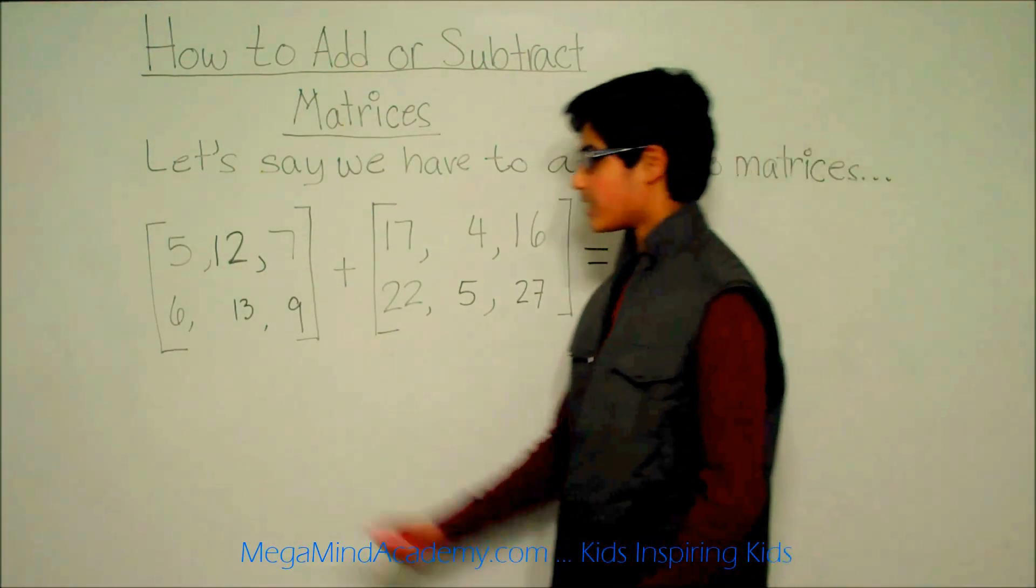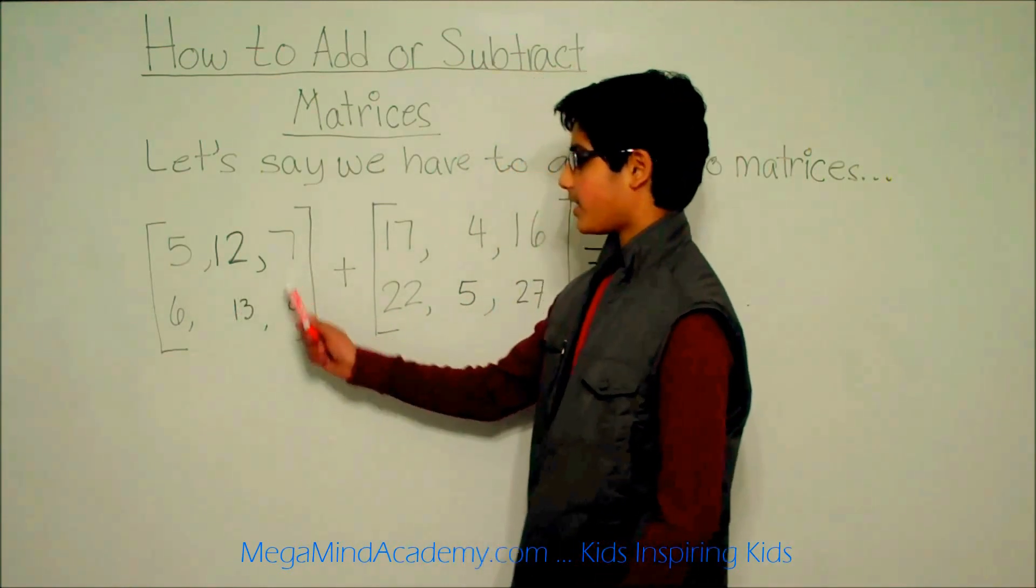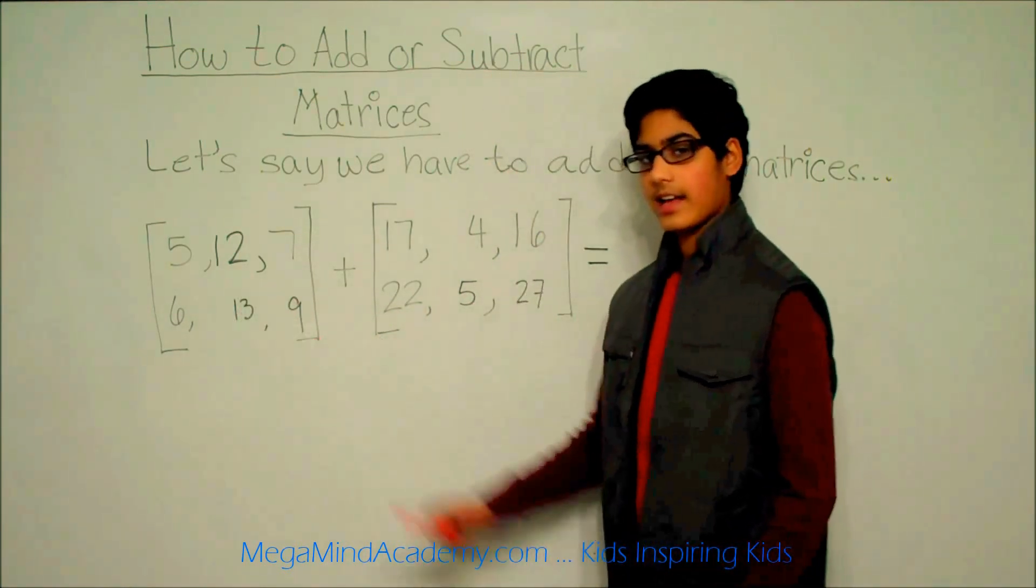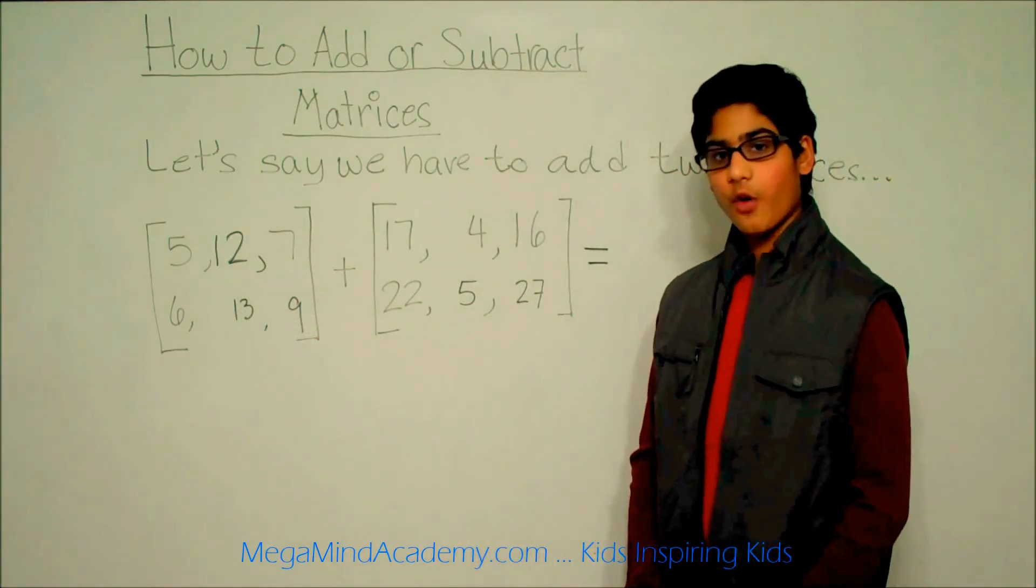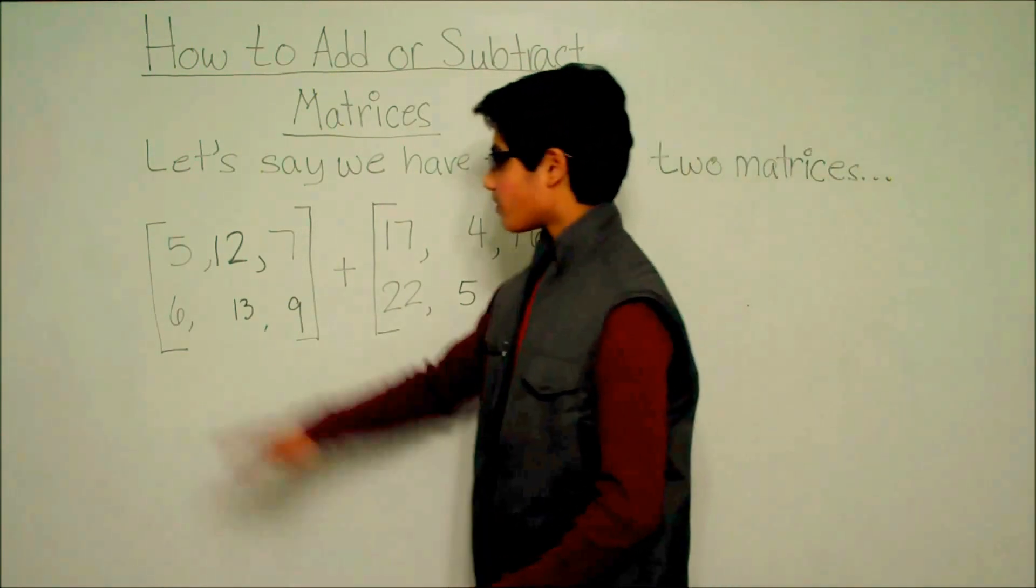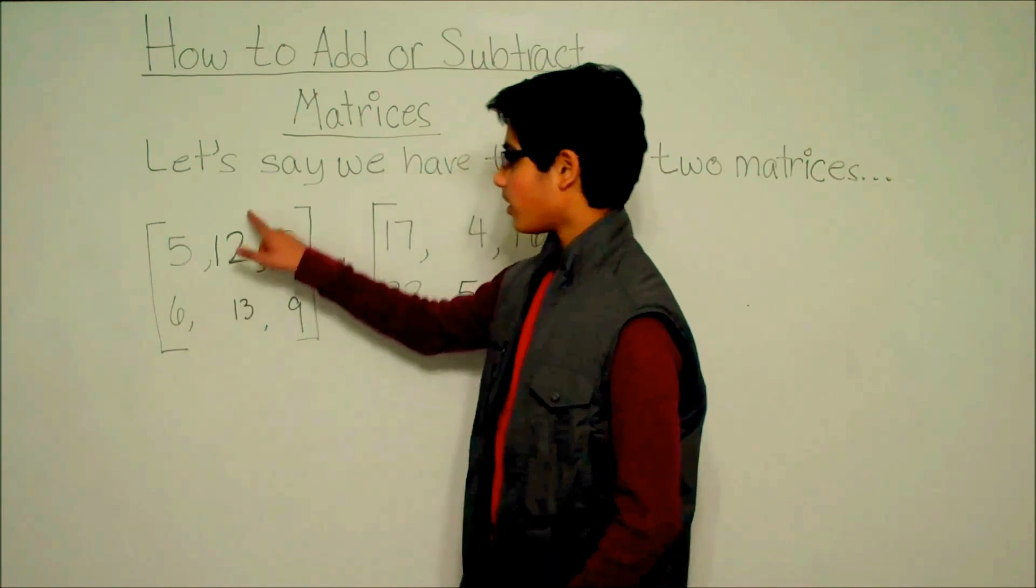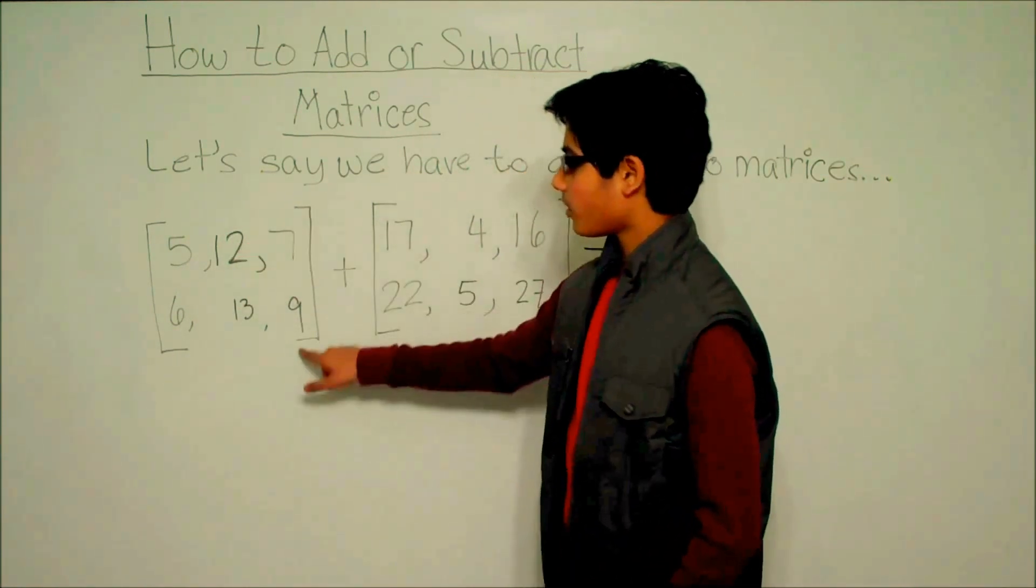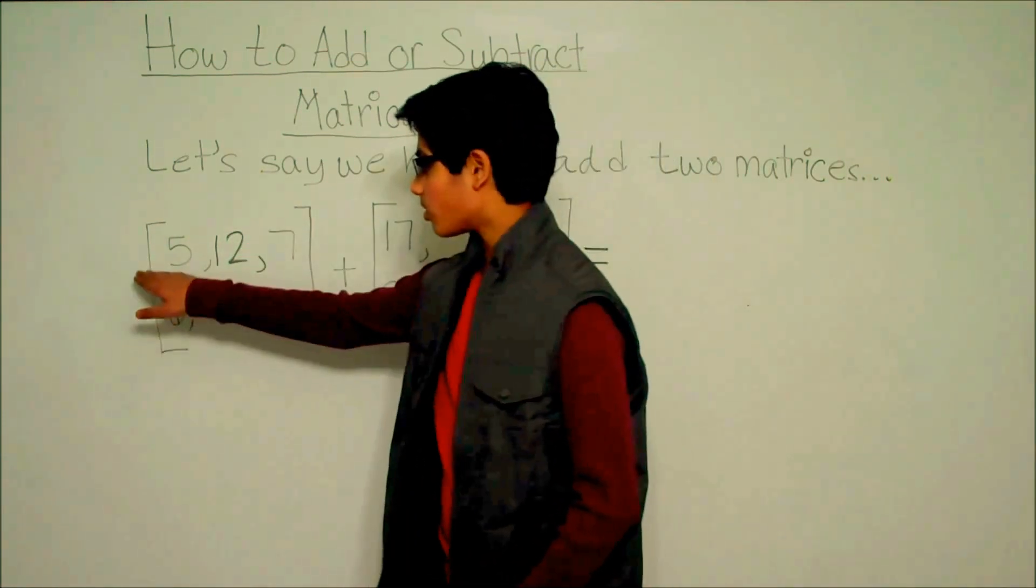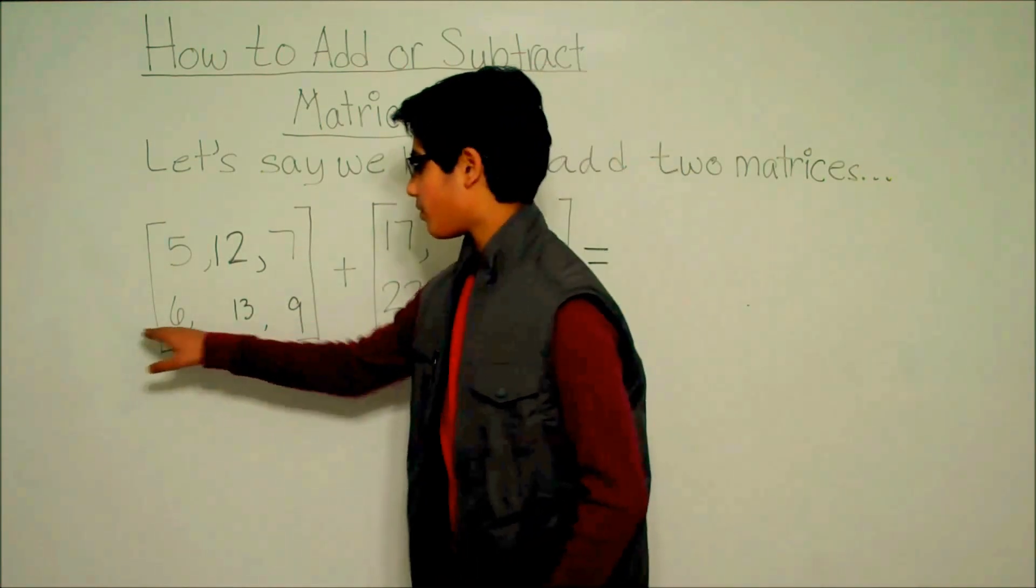The first matrix is 5, 12, 7, 6, 13, 9, and it's in the format of three columns - this is column 1, column 2, column 3 - and two rows - row 1 and row 2.